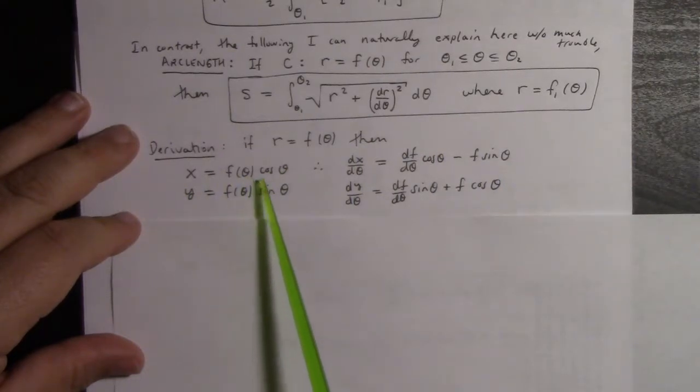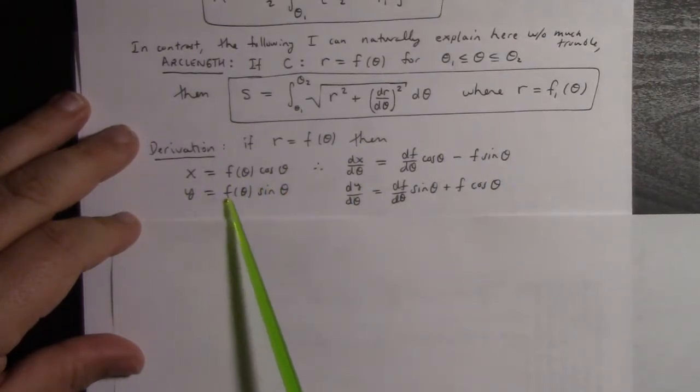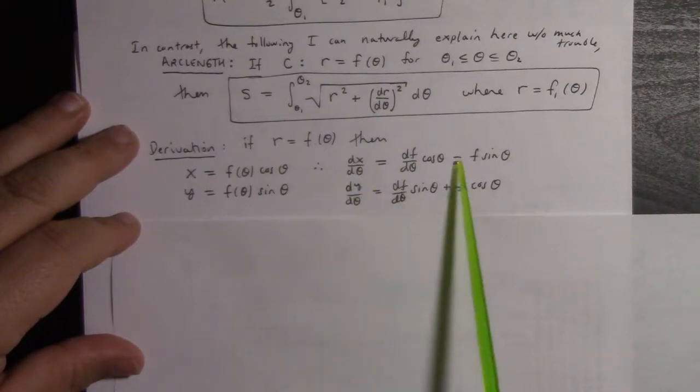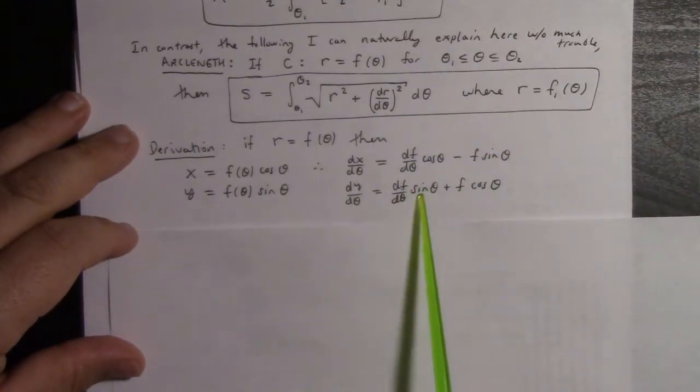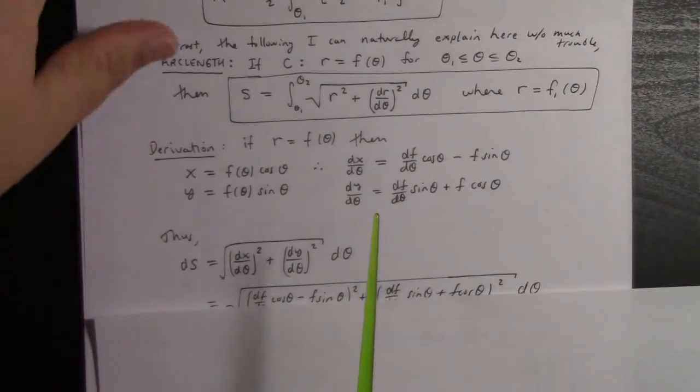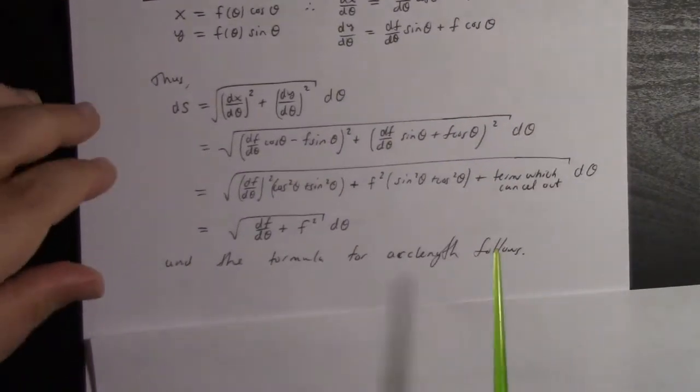We're looking at a curve parametrized by θ. So x = f(θ)cos(θ), y = f(θ)sin(θ). We differentiate by the product rule. We get this, we get that. We square and add them to calculate the arc length.